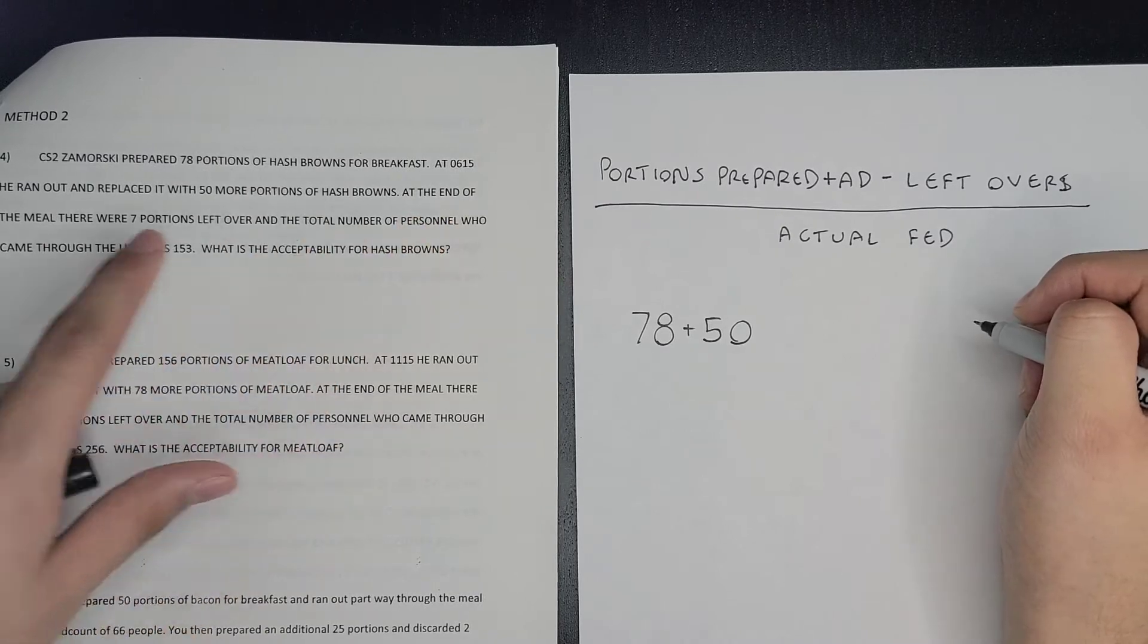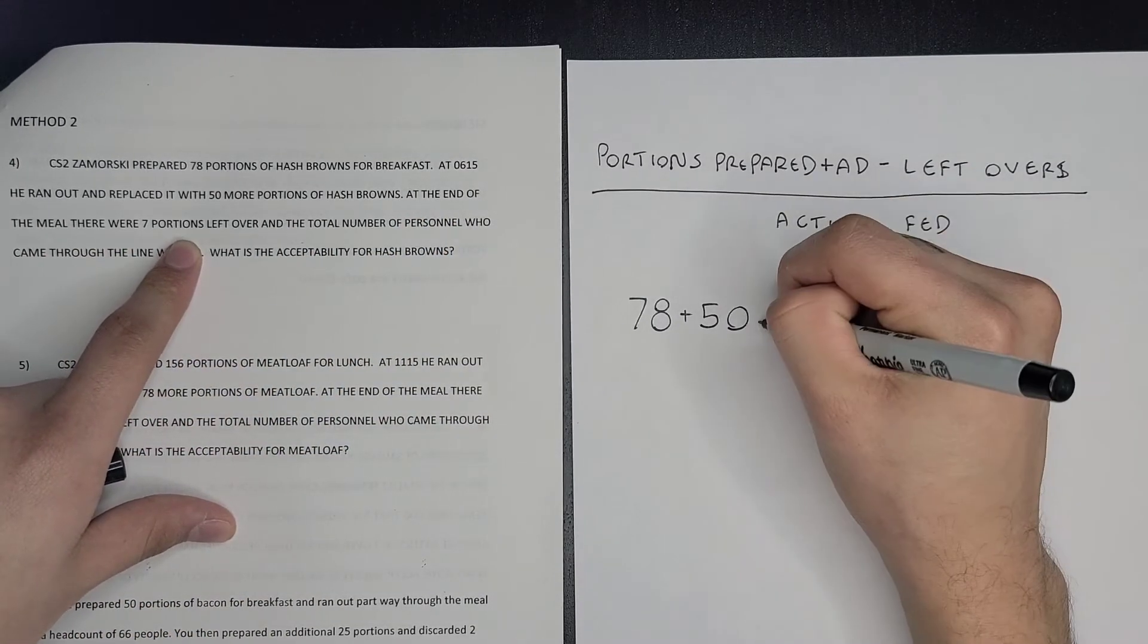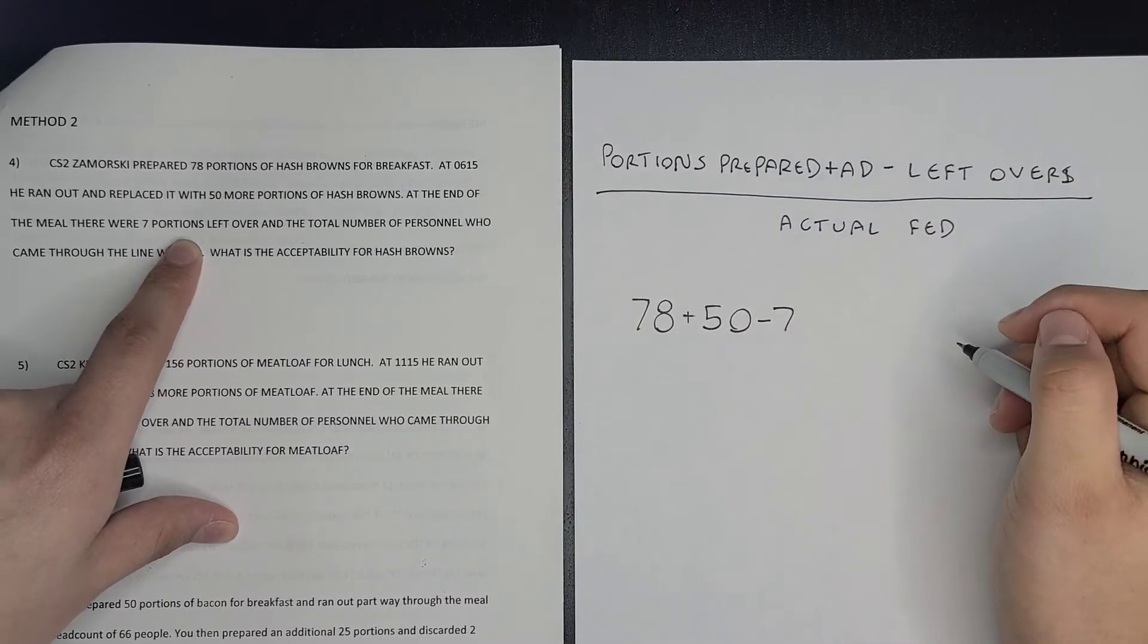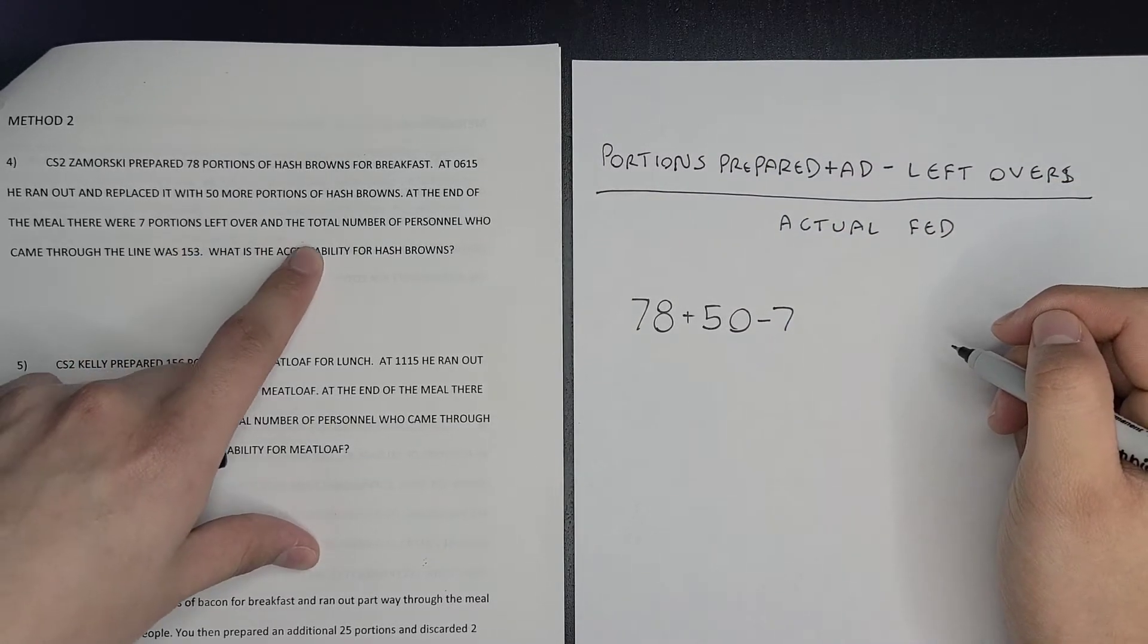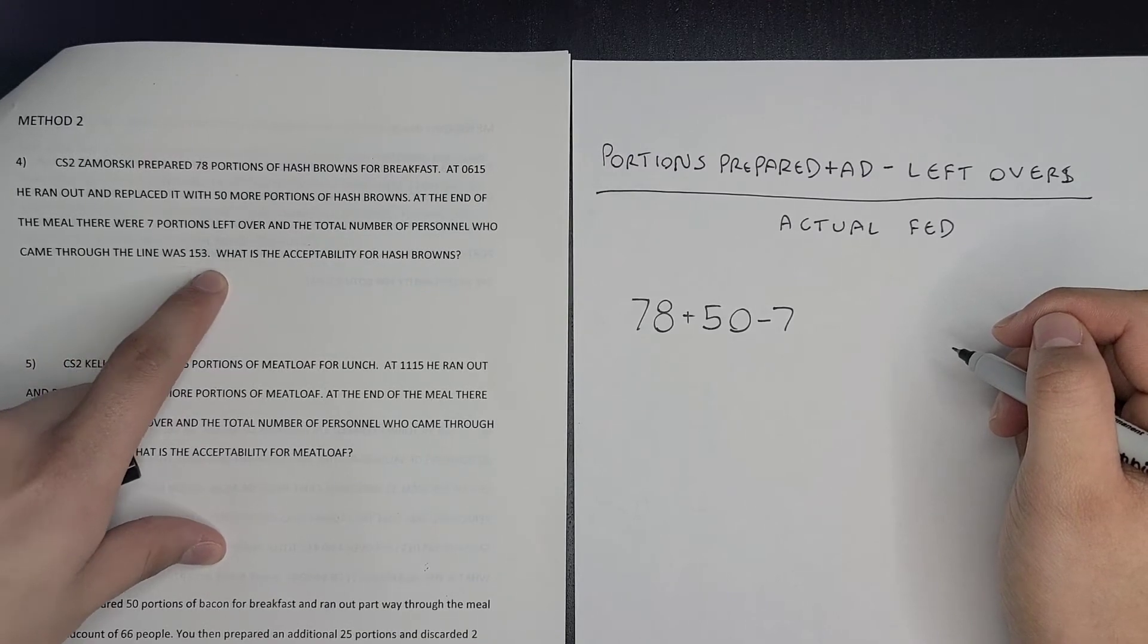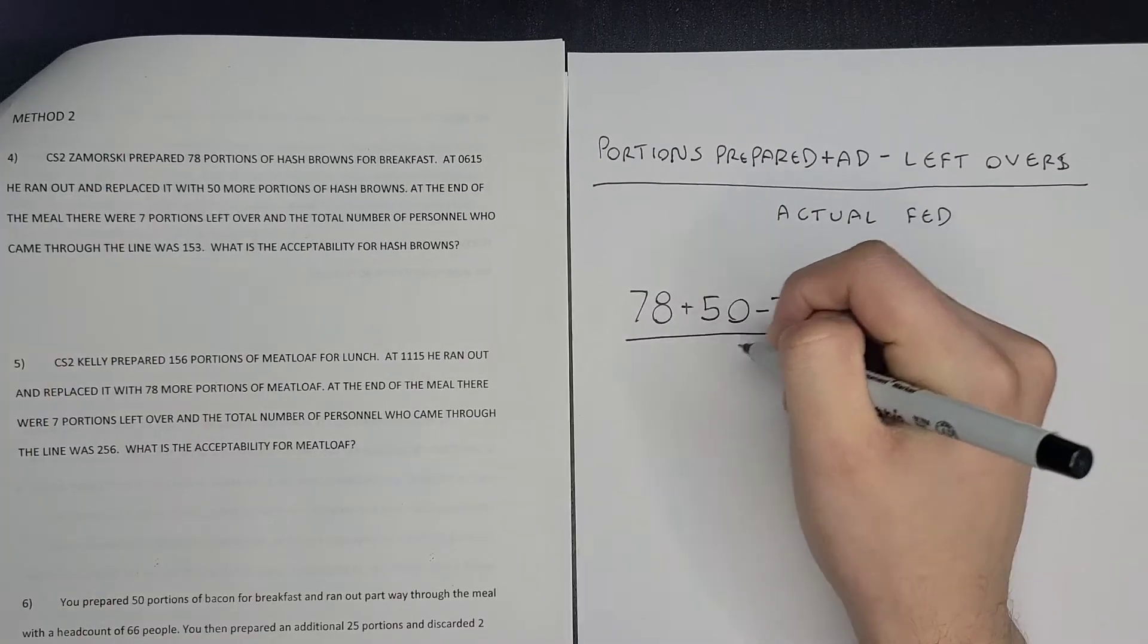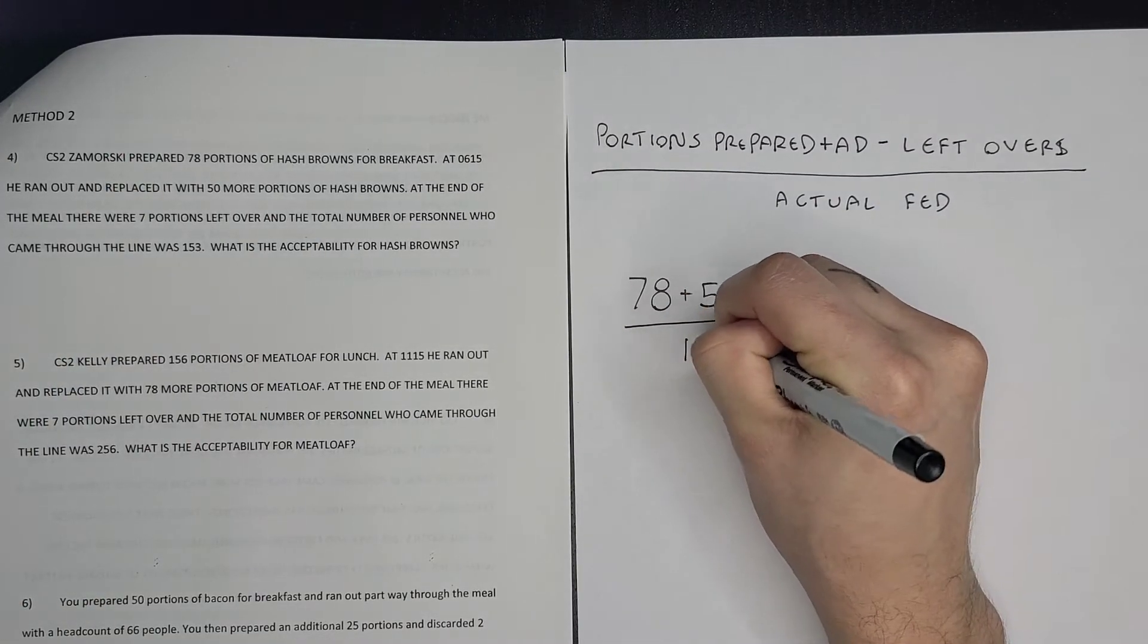At the end of the meal there were seven portions left over. So minus seven. The total number of personnel who came through the line was 153. What is the acceptability for hash browns? So you divide this by 153.